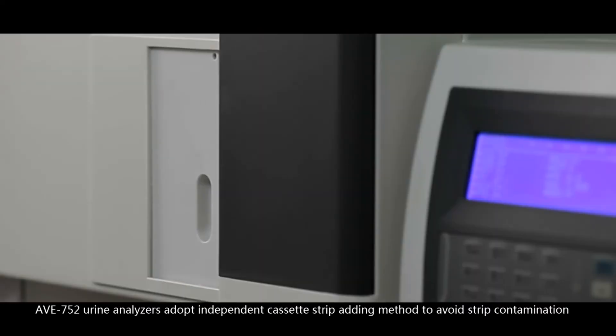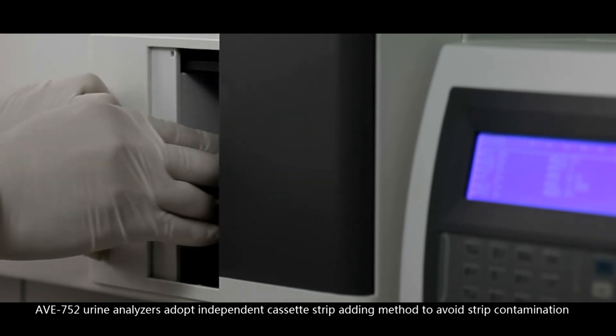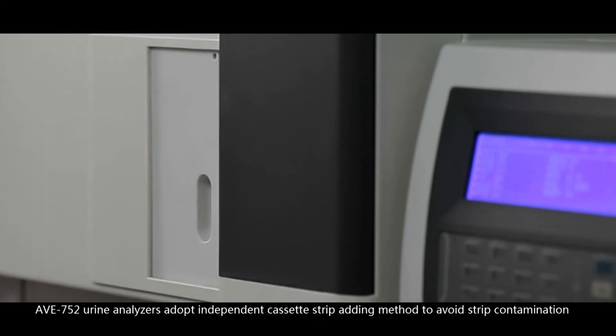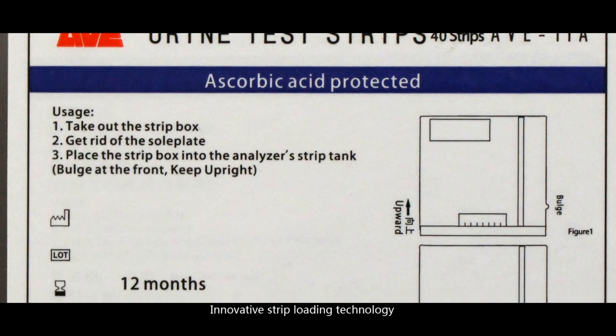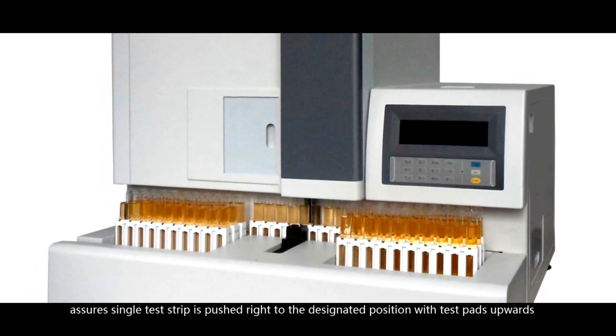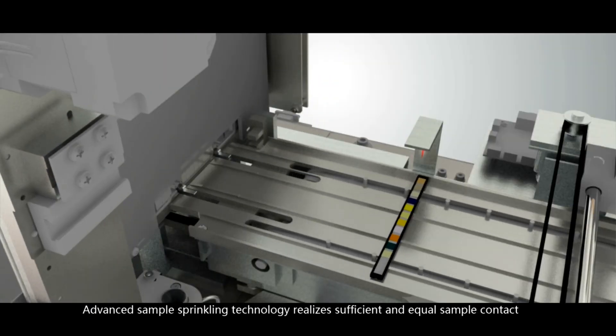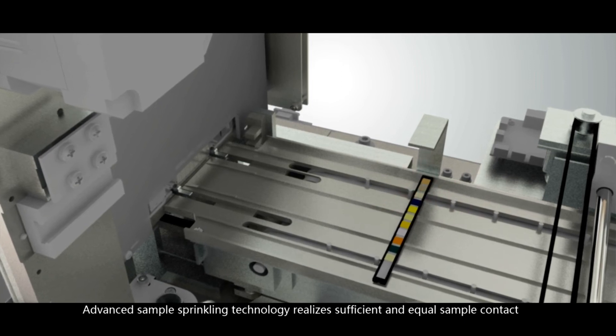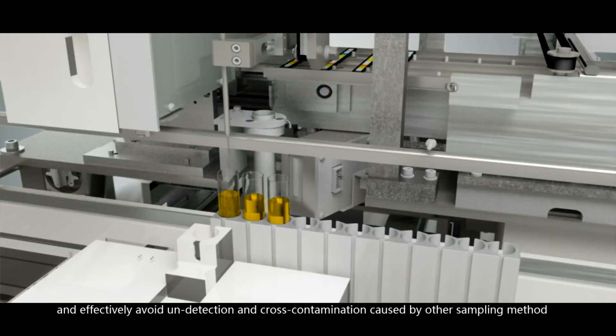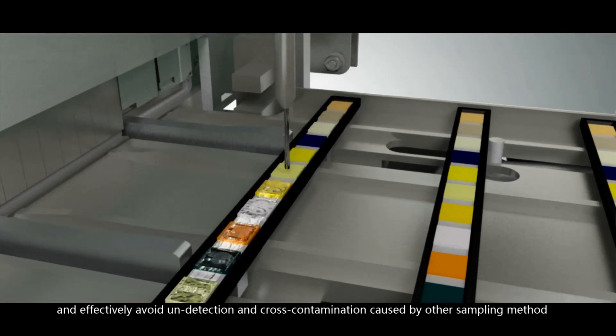AVI-752 urine analyzers adopt independent cassette strip adding method to avoid strip contamination. Innovative strip loading technology assures single test strip is pushed right to the designated position with test pads upwards. Advanced sample sprinkling technology realizes sufficient and equal sample contact and effectively avoid undetection and cross contamination caused by other sampling method.